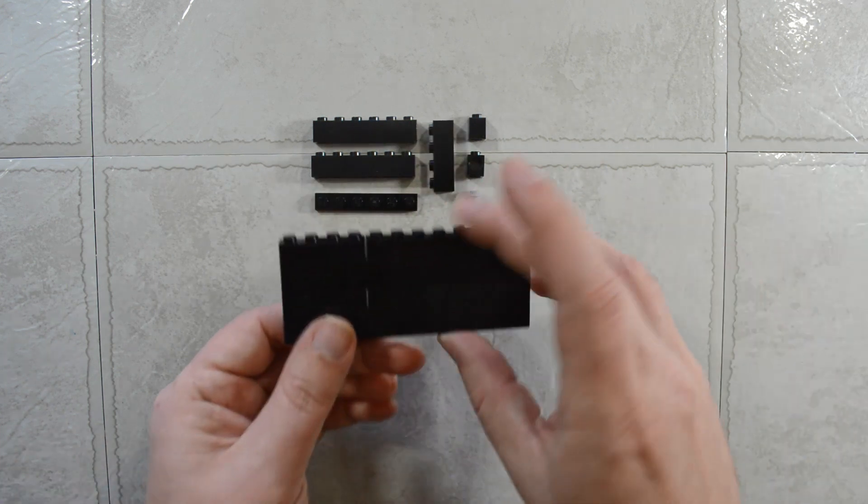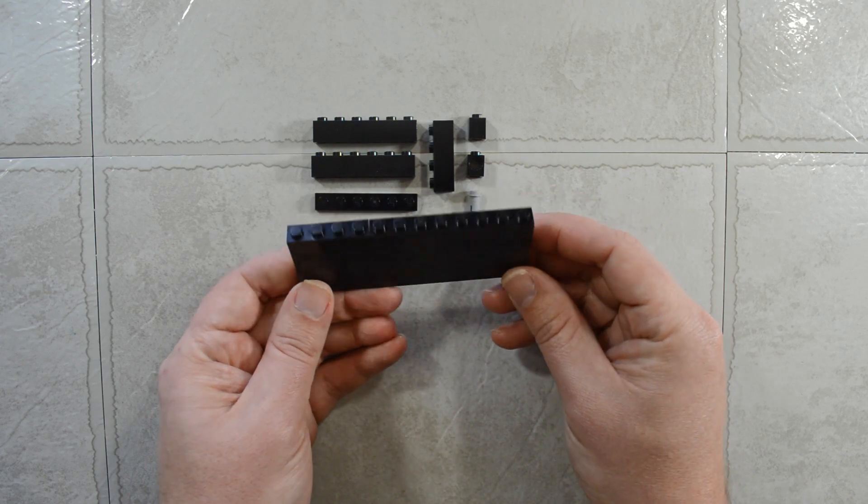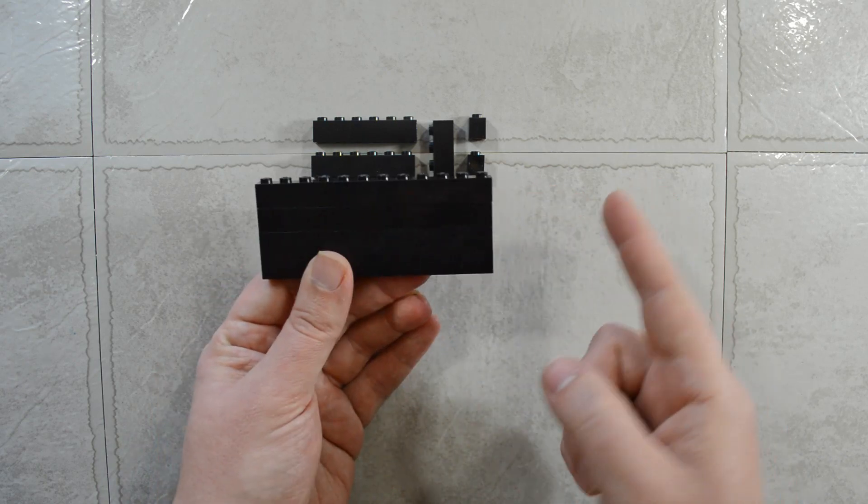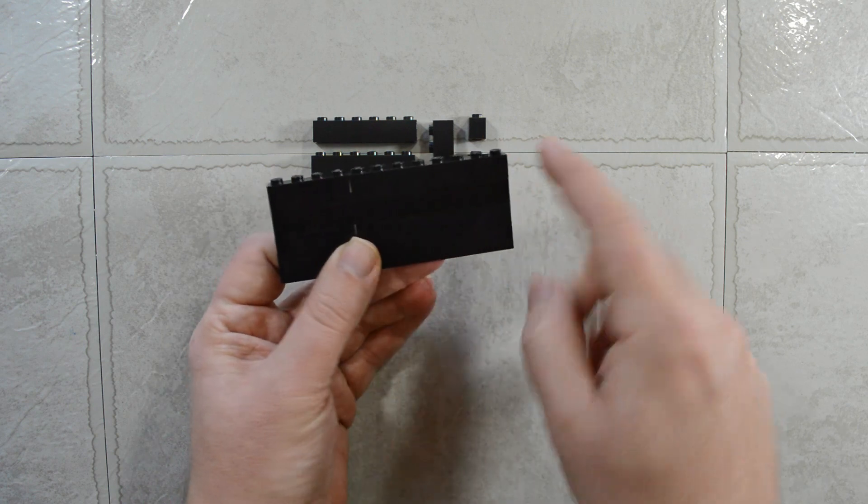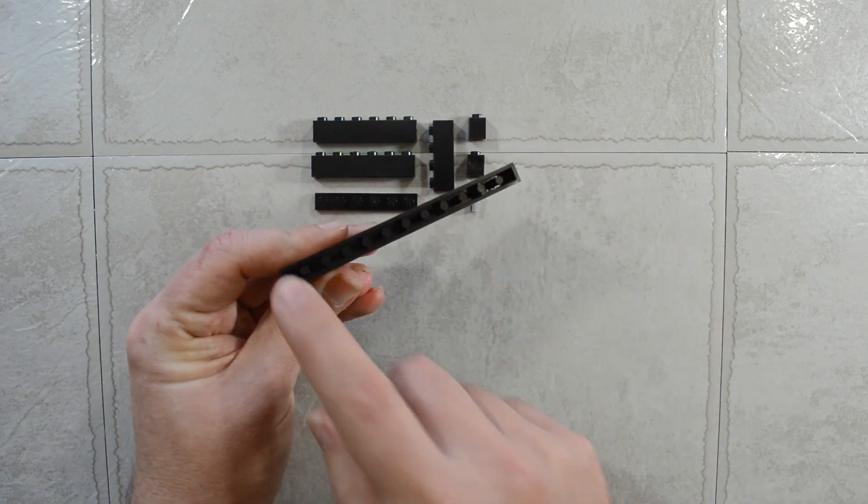Usually when you build a wall in Lego, something like this, you will get two smooth sides. You'll get your studs on the top and your anti-studs on the bottom.